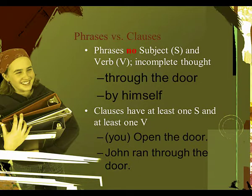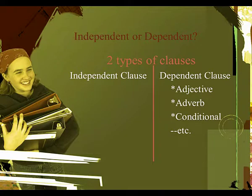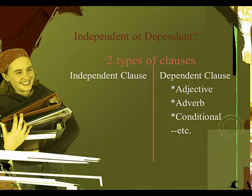That leads to the next confusing aspect: there are two types of clauses — independent clauses, which I refer to as IC, and dependent clauses, which I refer to as DC. ESL students get confused here because they are taught things like conditional clauses and adjective clauses.